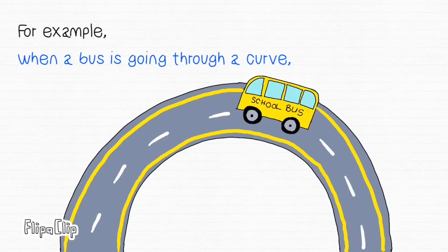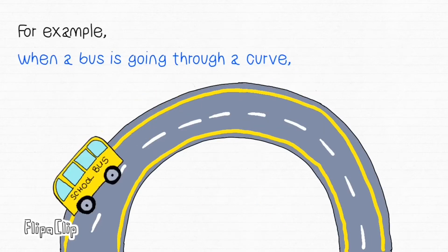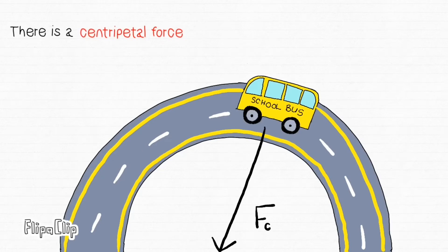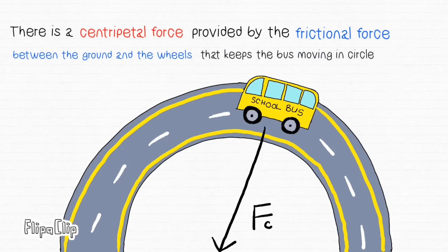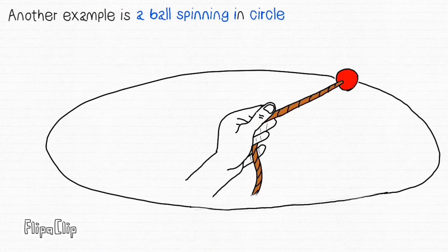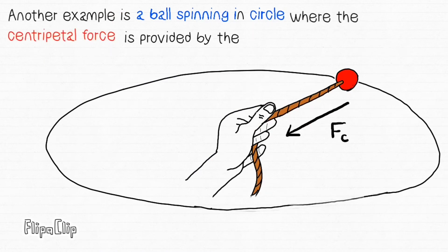For example, when a bus is going through a curve, there is a centripetal force provided by the frictional force between the ground and the wheels that keeps the bus moving in circle. Another example is a ball spinning in circle, where the centripetal force is provided by the tension force.